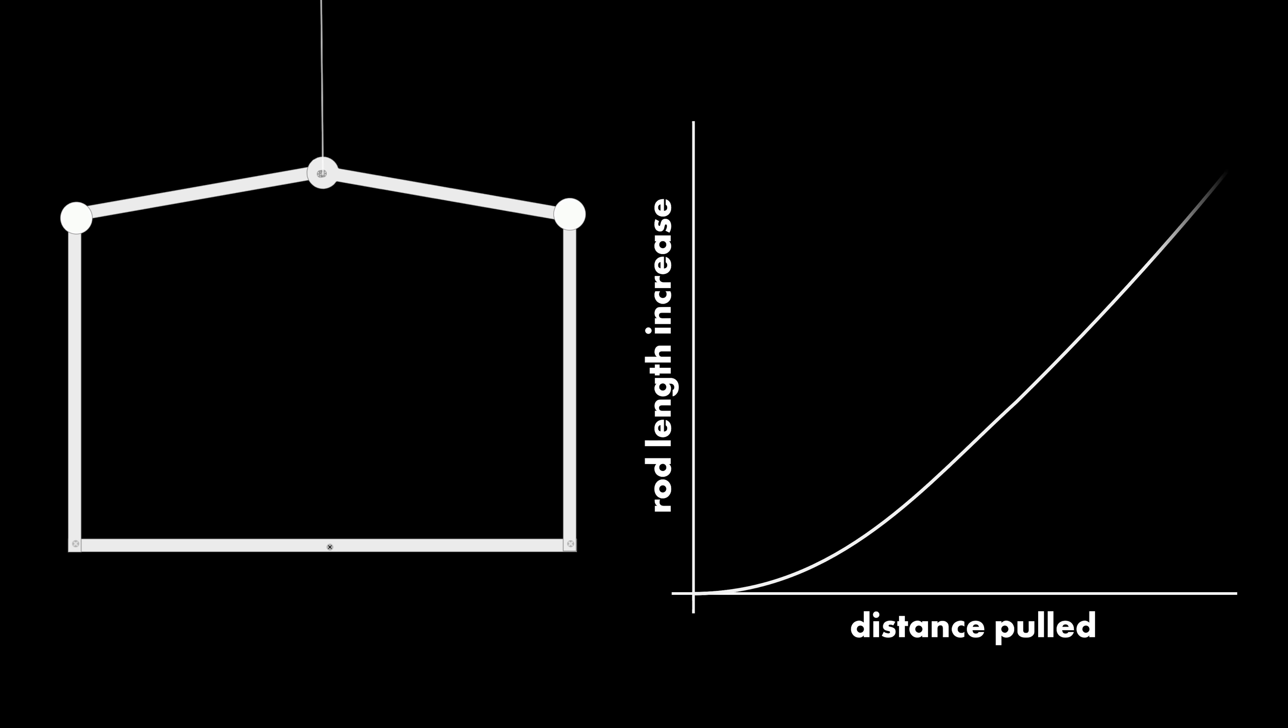But what about a structure like this? How does this bar lengthen as I pull up on this joint? Well, look, the curve flattens out as you approach zero movement. So at the very beginning, it's possible to move that joint without the bar lengthening at all. But then as soon as the joint does move, the bar will have to lengthen. In other words, the structure is only flexible in the limit of no flex.